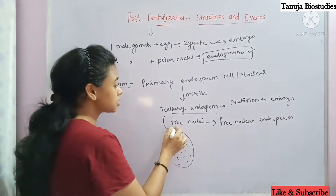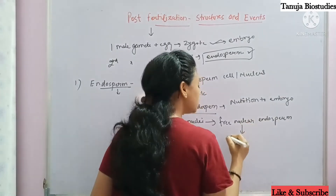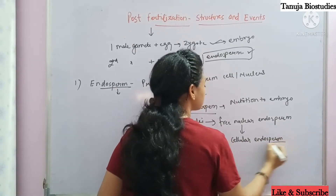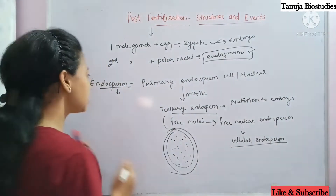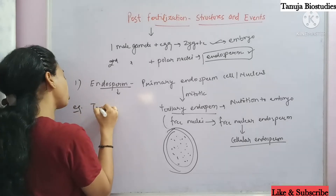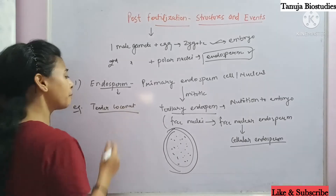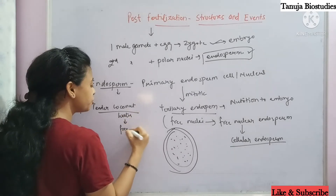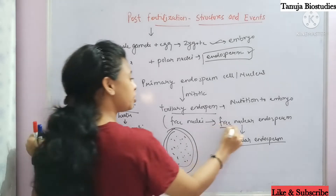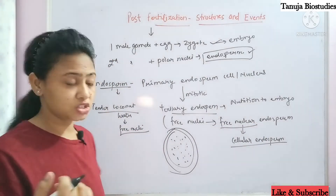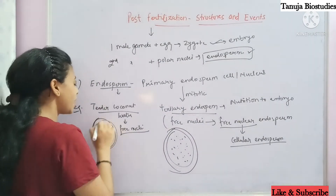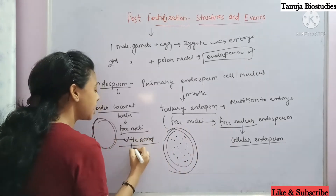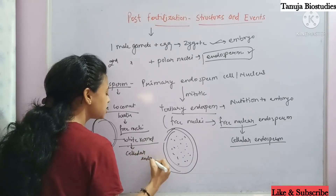Later on, walls form around the nuclei in the corners, creating the cellular endosperm. For example, in tender coconut — the coconut water we drink is actually the free nuclear endosperm. The white kernel of the coconut that we consume is actually the cellular endosperm.